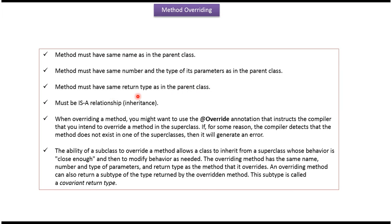The method must have the same return type as in the parent class. There must be an is-a relationship, meaning inheritance. When overriding a method, you might want to use the @Override annotation. That instructs the compiler that you intend to override a method in the superclass. If for some reason the compiler detects that the method does not exist in one of the superclasses, then it will throw a compile-time error.